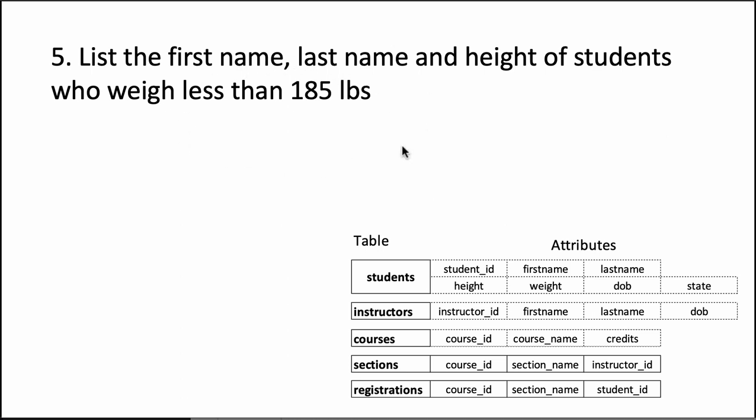So the first thing to notice here is that we are only talking about students. So the table of interest is only students, no other table. Secondly, we are saying that we want the values of only specific columns, not all columns. So we are going to have to list out the columns rather than just say star.